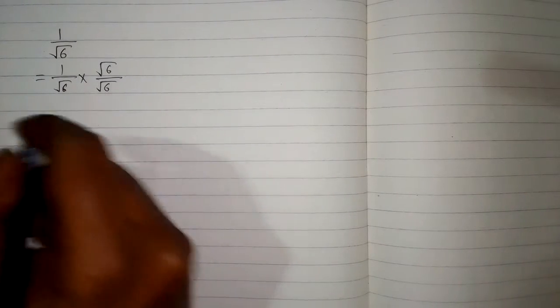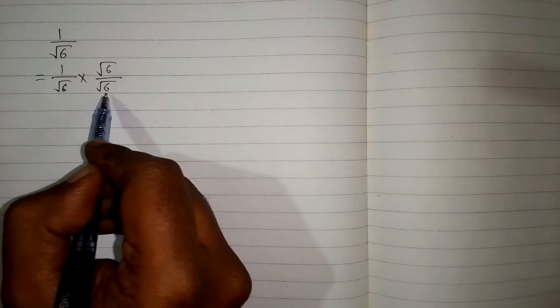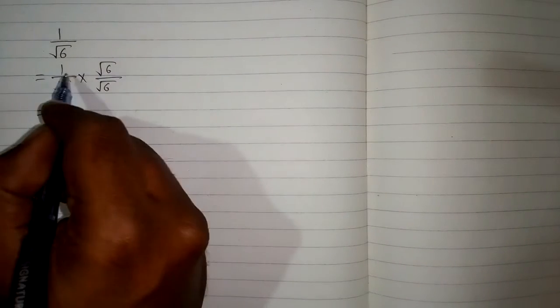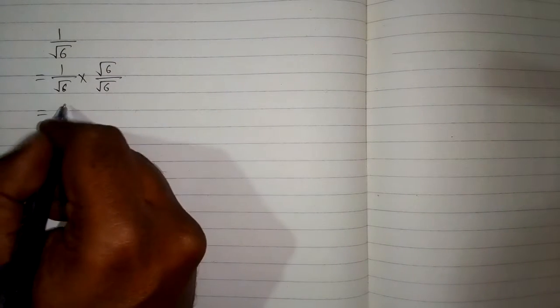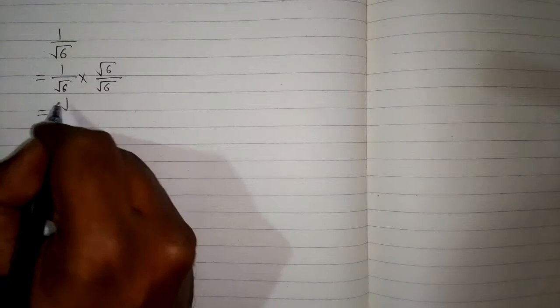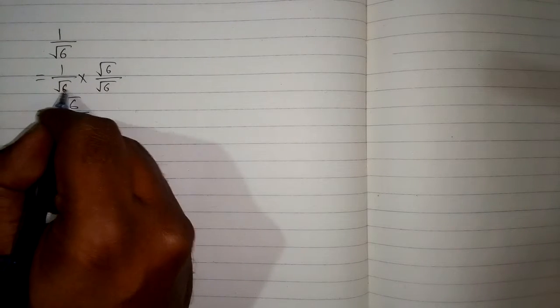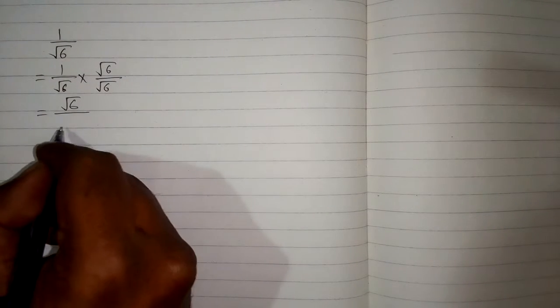So we will multiply this fraction by square root of 6 divided by square root of 6. Then 1 multiplied by square root of 6 is square root of 6, and square root of 6 multiplied by square root of 6.